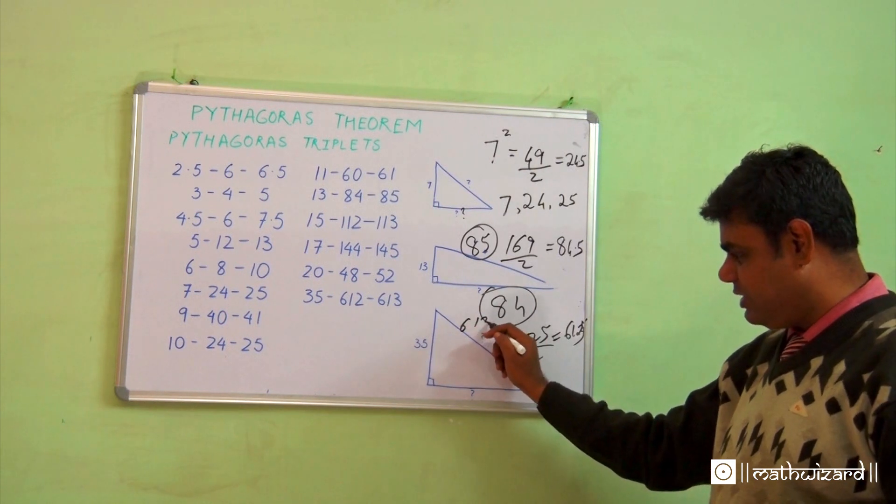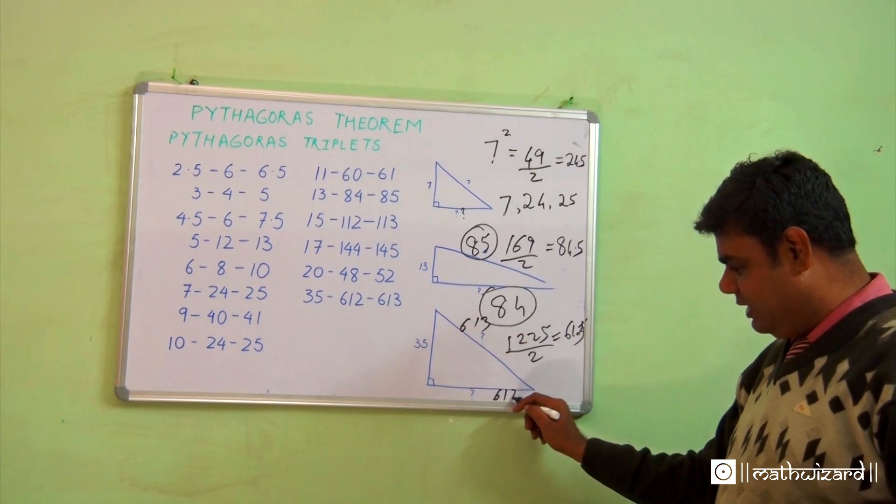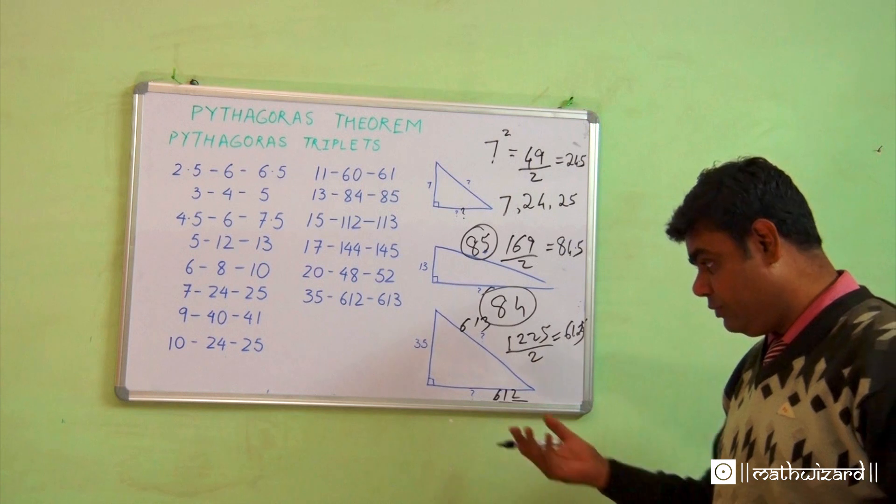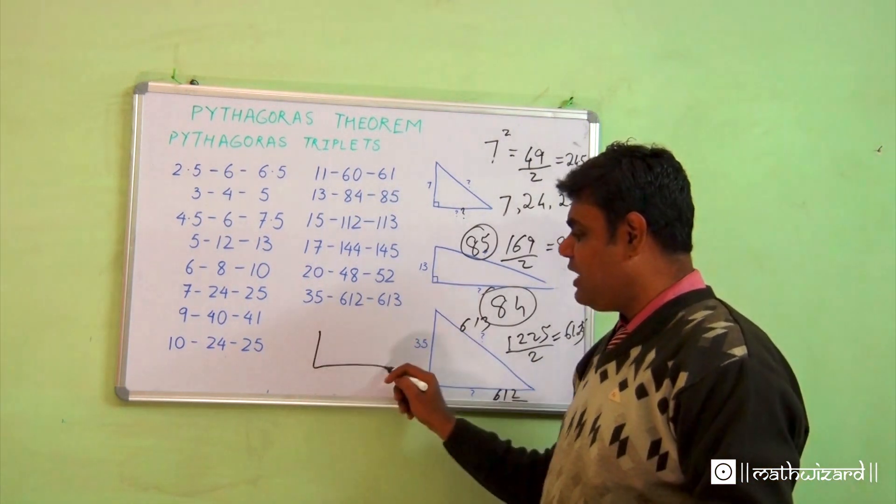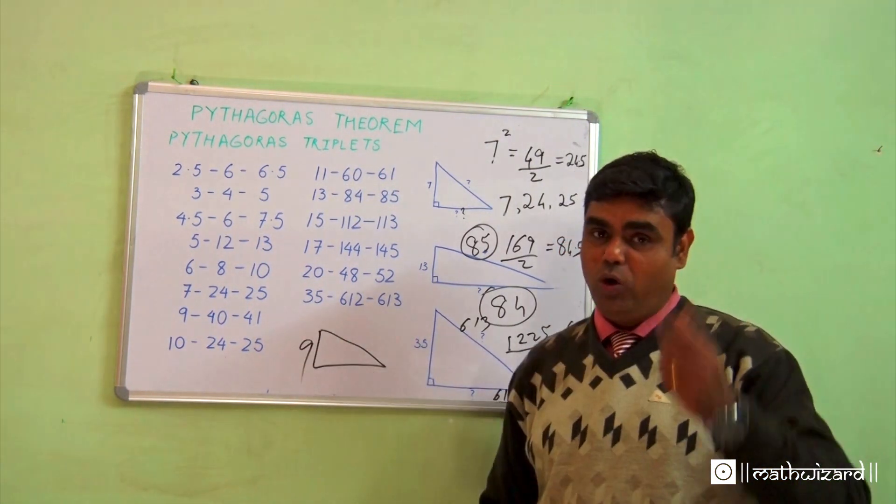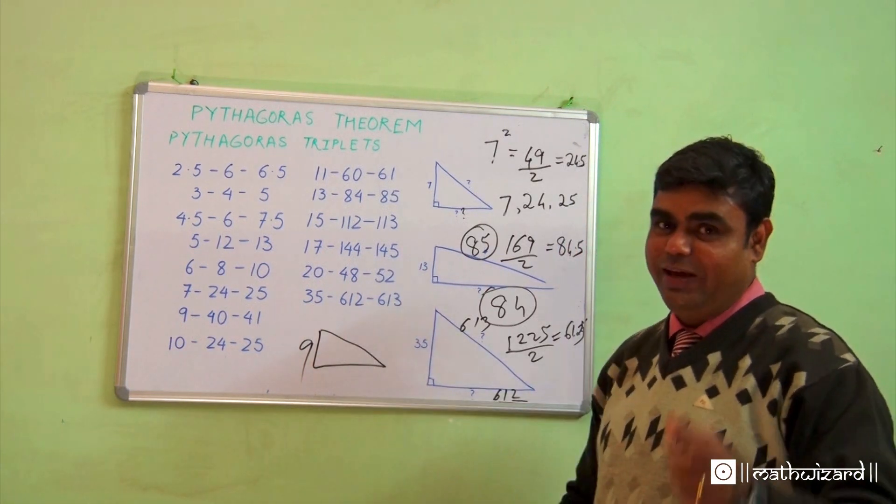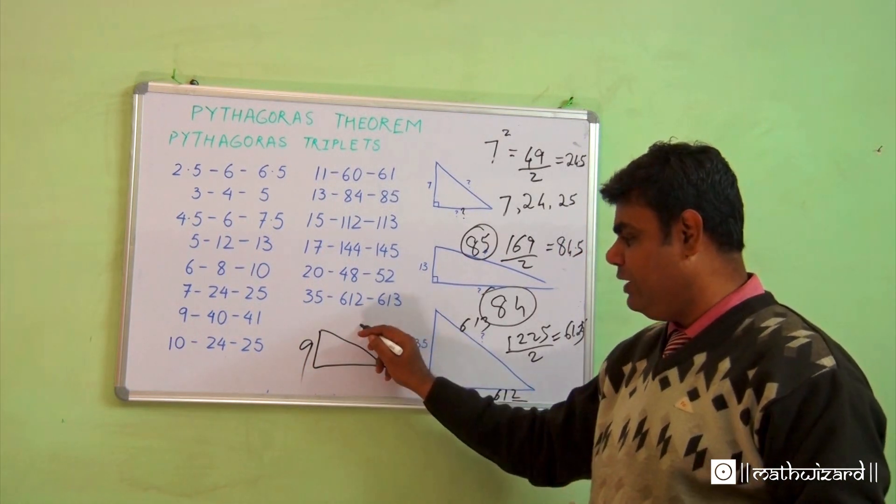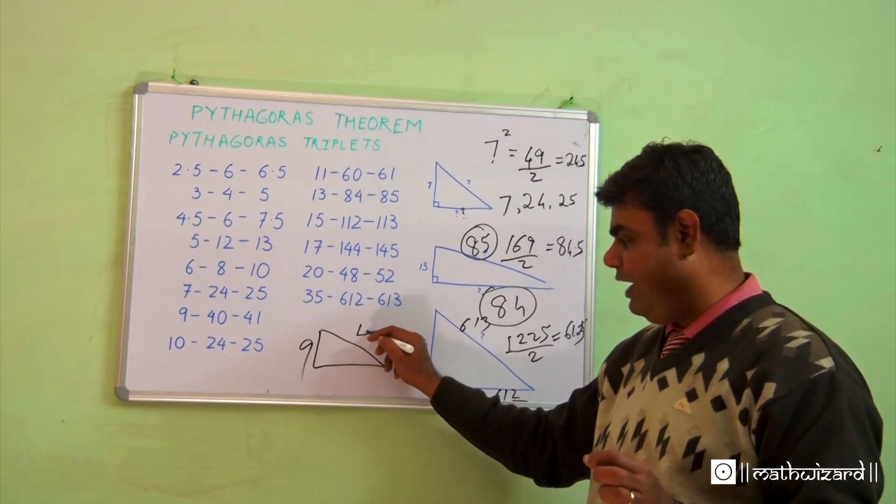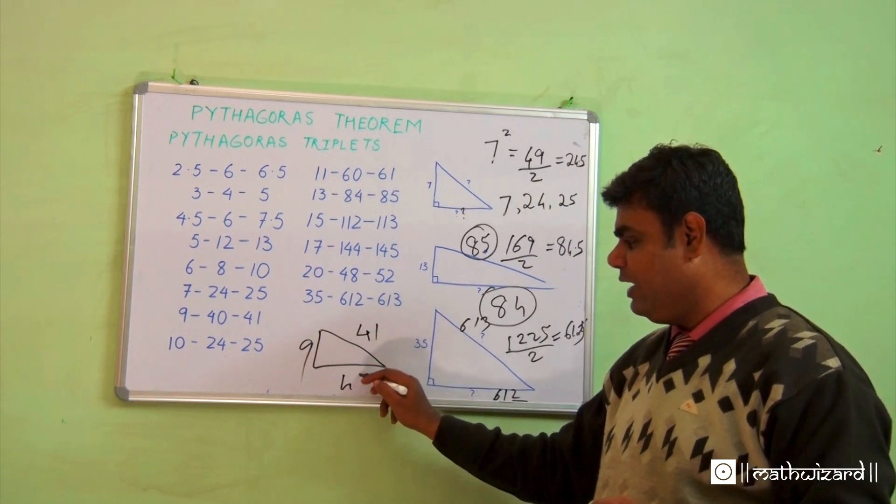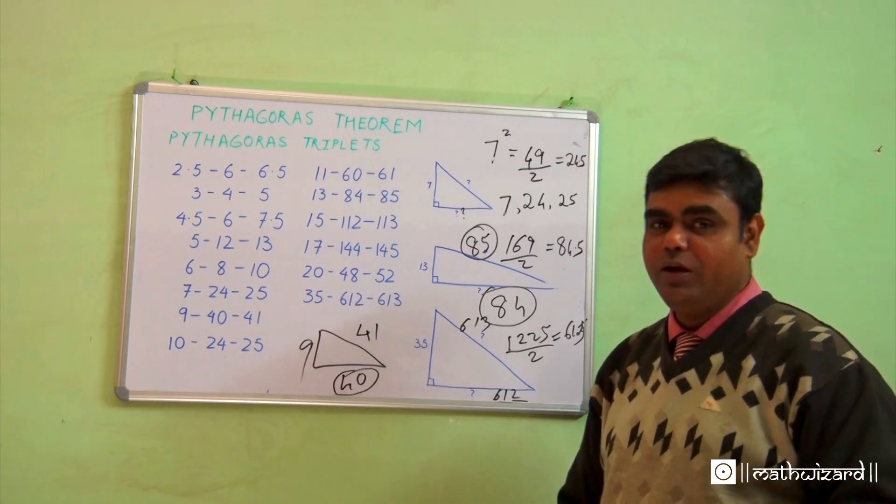If someone asks me 9, what are my answers? 9 square is 81, half of which is 40.5. So the bigger side is 41, this side is 40.